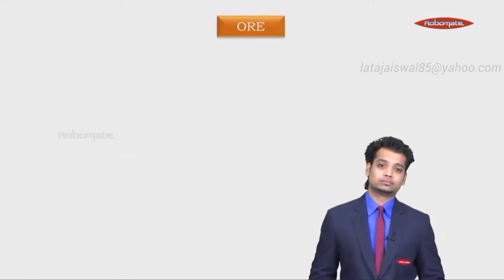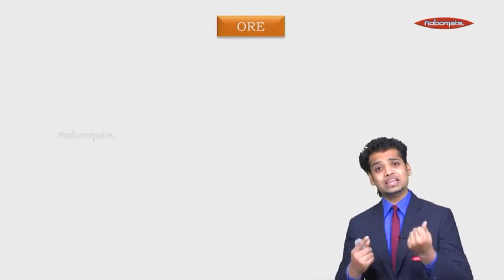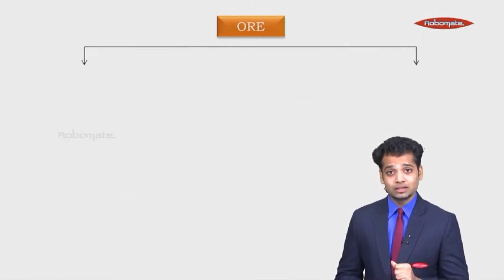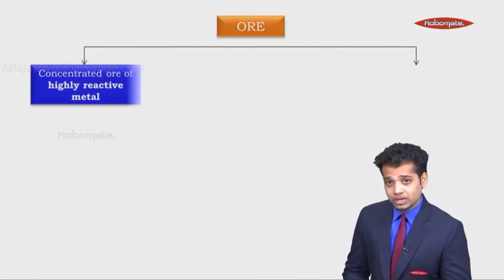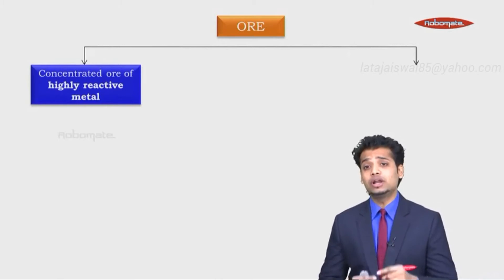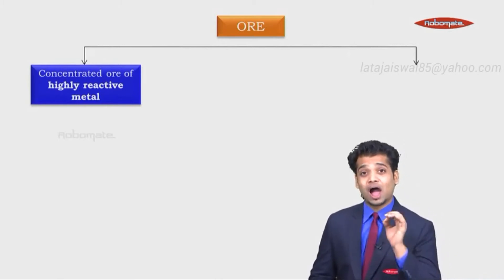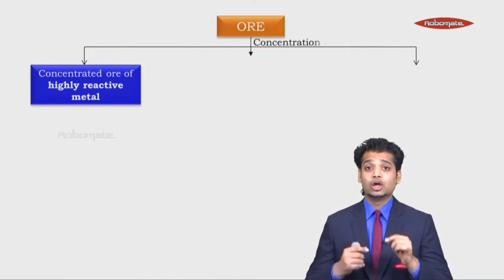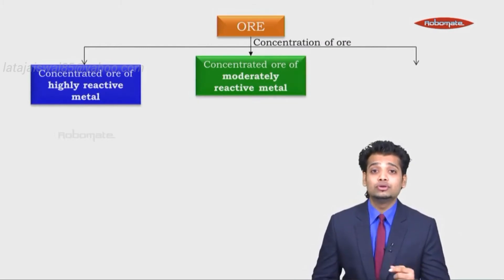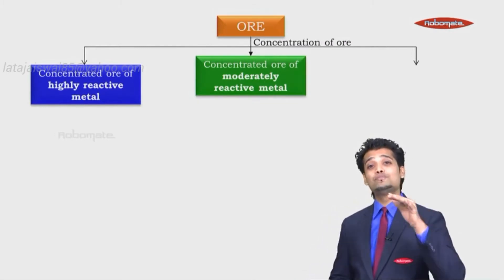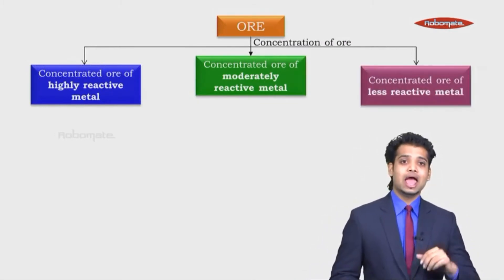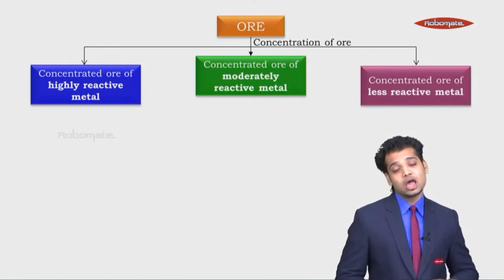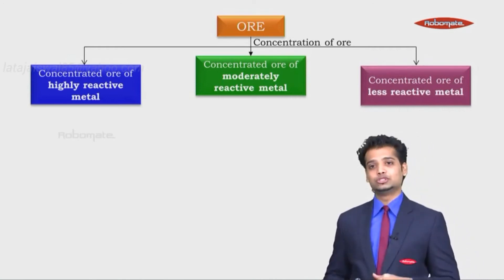An ore can be of any metal — it can be of a reactive metal or a non-reactive metal. So we look at: the concentrated ore of a highly reactive metal, the concentrated ore of a moderately reactive metal, and the concentrated ore of a less reactive metal. What do you do for each of these?